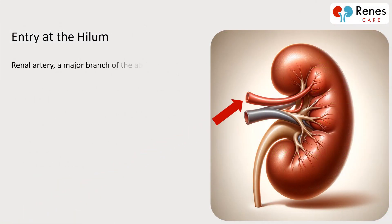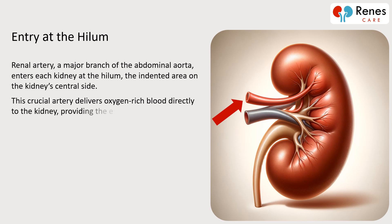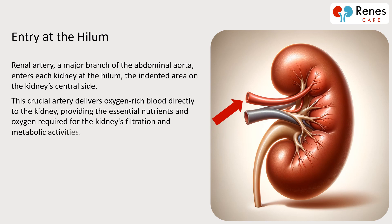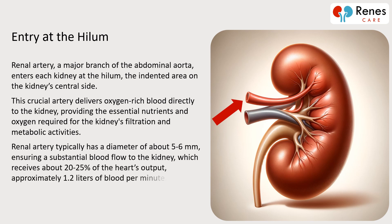The renal artery, a major branch of the abdominal aorta, enters each kidney at the hilum — the indented area on the kidney's central side. This crucial artery delivers oxygen-rich blood directly to the kidney, providing the essential nutrients and oxygen required for filtration and metabolic activities. The renal artery typically has a diameter of about 5 to 6 millimeters, ensuring substantial blood flow; the kidney receives about 20 to 25 percent of the heart's output, approximately 1.2 liters of blood per minute.